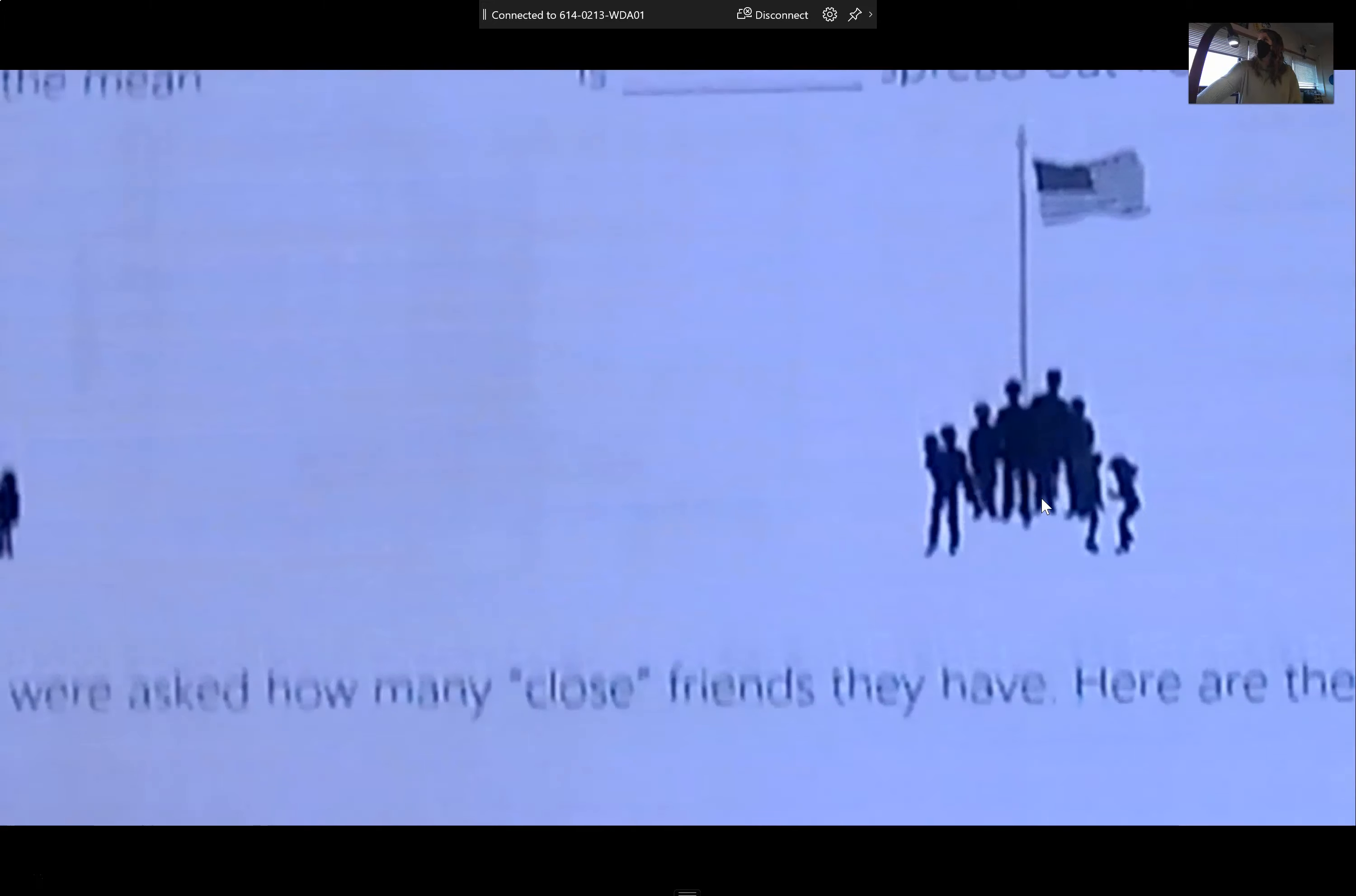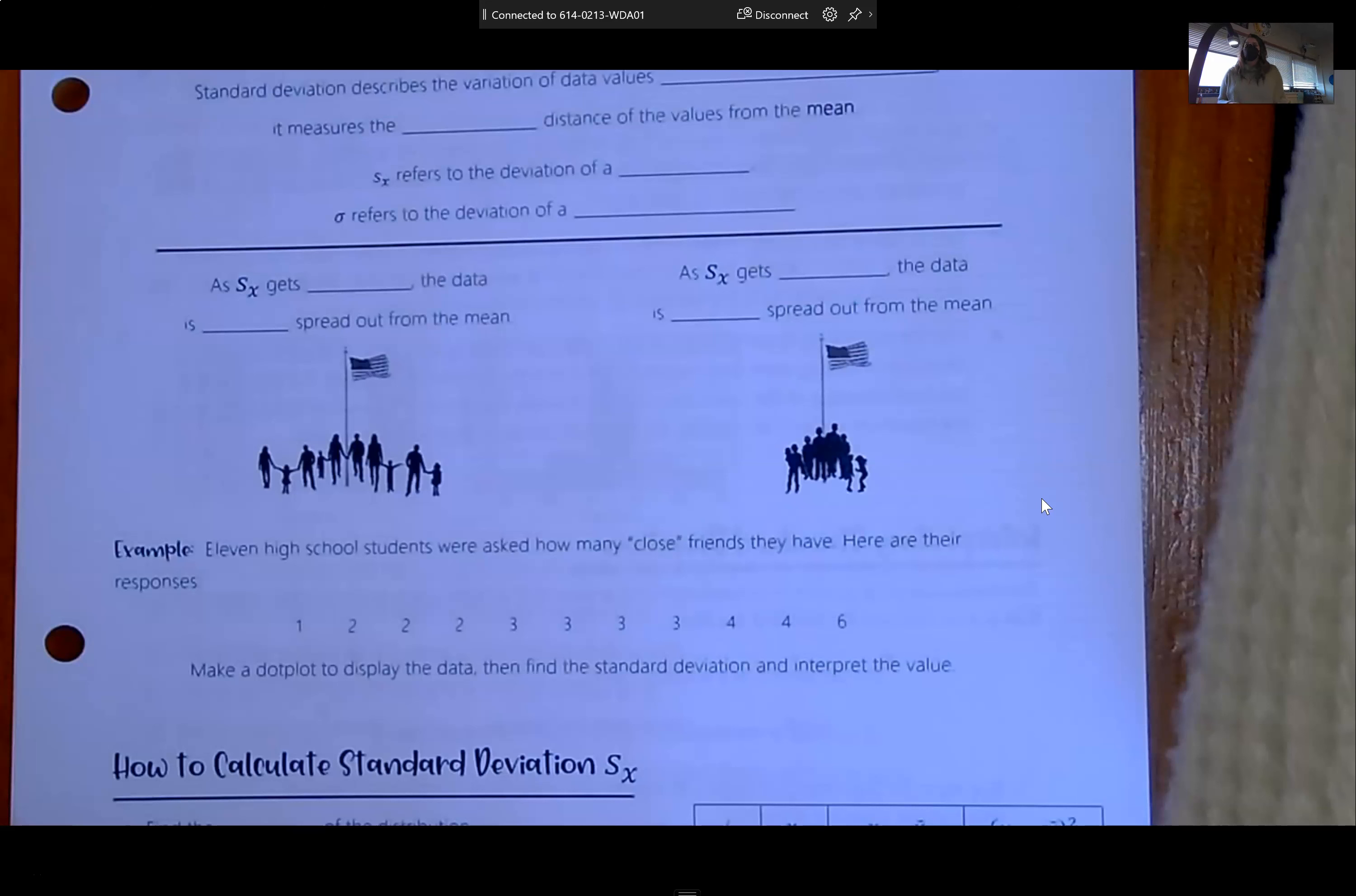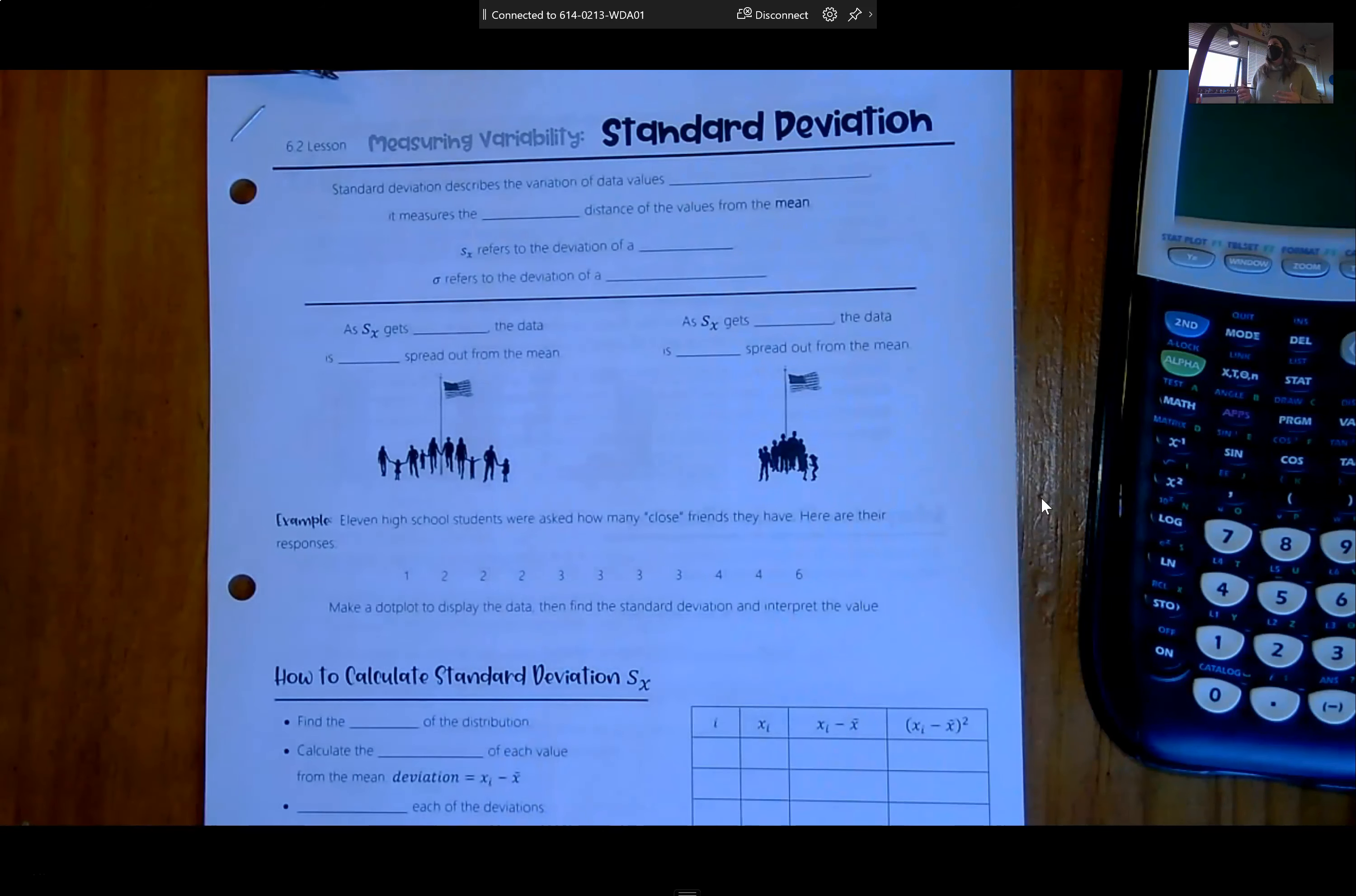So today we're doing standard deviation, and we've actually seen this idea before when we learned scatter plots. We had our data on our graph and then we had a line going through all of the data points. We were asked to interpret R, R squared, and S, and S was the description of how far away on average is the actual data from the prediction line. That's really standard deviation.